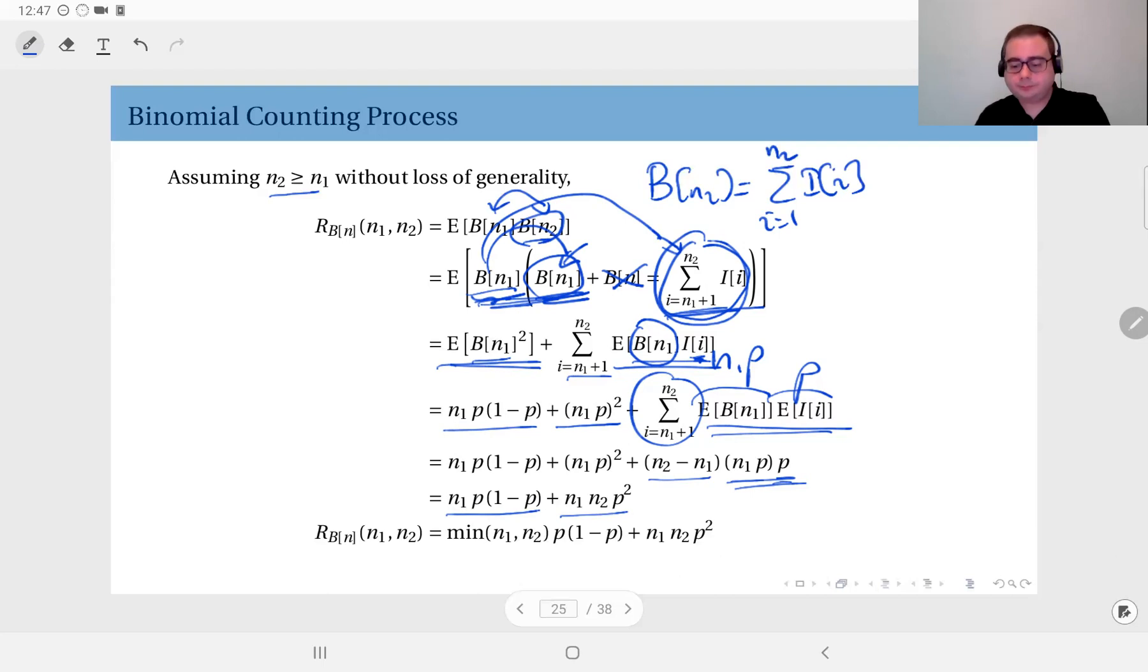Okay, n1 n2 appears together here, and here n1 is by itself. So it's essentially, since we assumed n2 is greater than or equal to n1, this is the minimum of the two time indices.